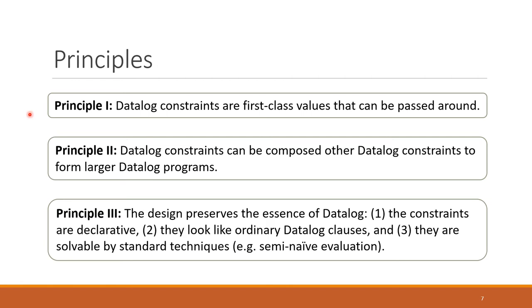The example illustrates several properties of our system. The first is that Datalog constraints are first-class values that can be passed around. The second is that Datalog constraints can be composed with other Datalog constraints to form larger programs. And the third is that we preserve the essence of Datalog. The constraints are declarative, they look like ordinary Datalog clauses, and they can be solved using standard techniques.